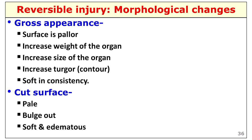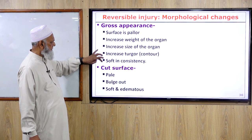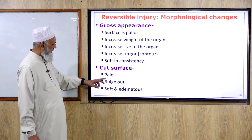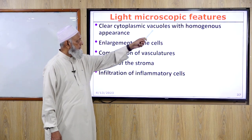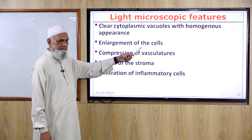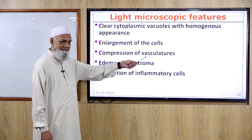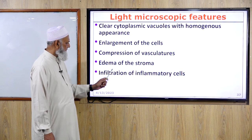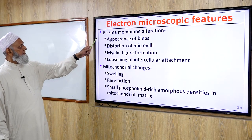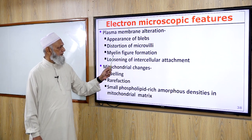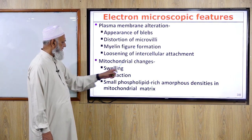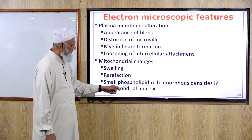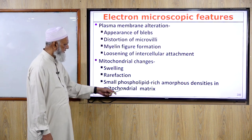Gross appearance of reversible injury: pale surface, increased weight and size of the organ, soft consistency. Cut surface is pale, bulging, soft, and edematous. Light microscopic features: clear cytoplasmic vacuoles with homogenous appearance, enlargement of cells, compression of intercellular blood vessels, edema of the stroma, infiltration of inflammatory cells. Electron microscopic features: plasma membrane alterations, appearance of blebs, distortion of microvilli, myelin finger formation, loosening of intercellular attachments, mitochondrial changes including swelling, rarefaction, small phospholipid deposits, and amorphous densities in the mitochondrial matrix (small = reversible, large = irreversible).